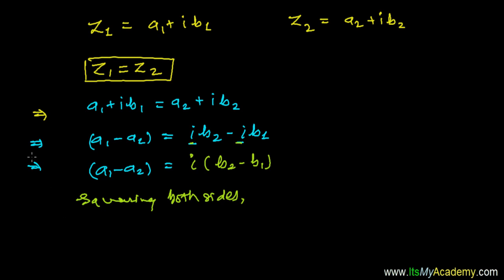We'll get here now (a1 minus a2) all square, and it will be i square times (b2 minus b1) all square.